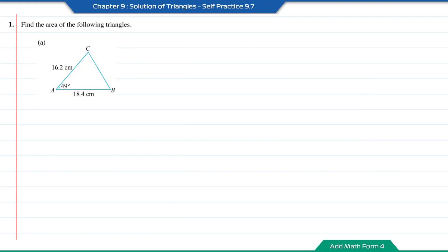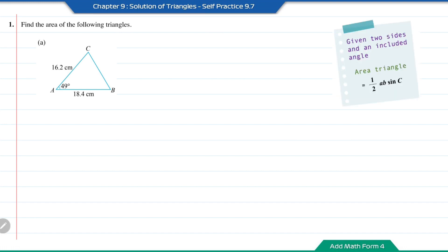Practice 9.7, question 1: find the area of the following triangles. When given two sides and an included angle, just like in question 8, we can find the area of a triangle using the formula 1 over 2 AB sin C.